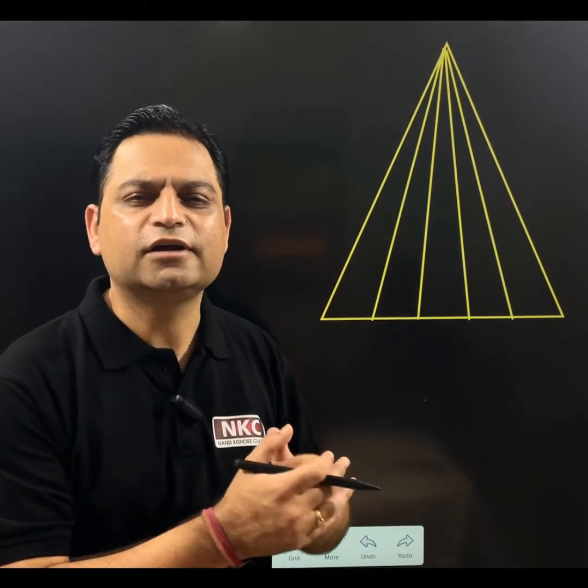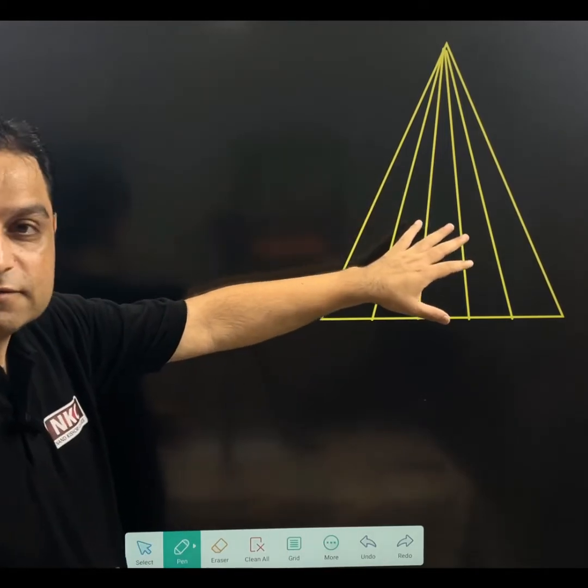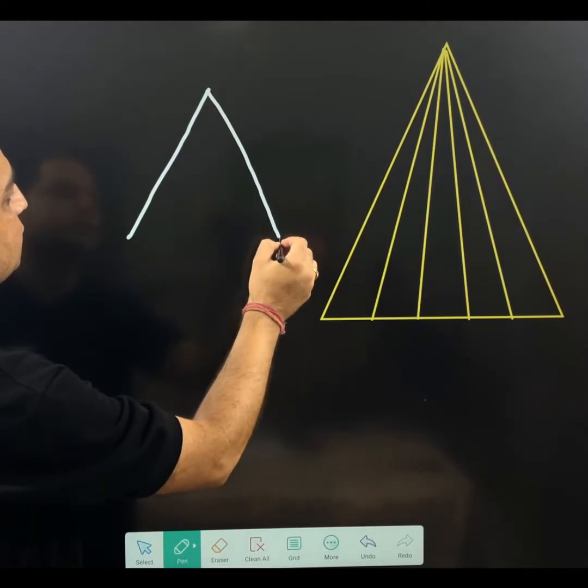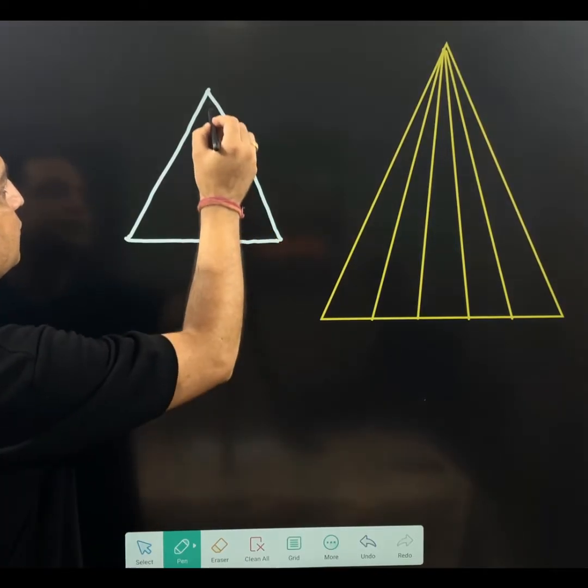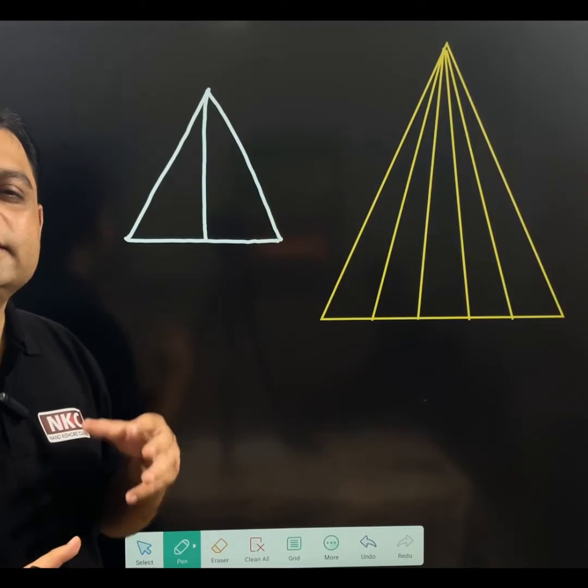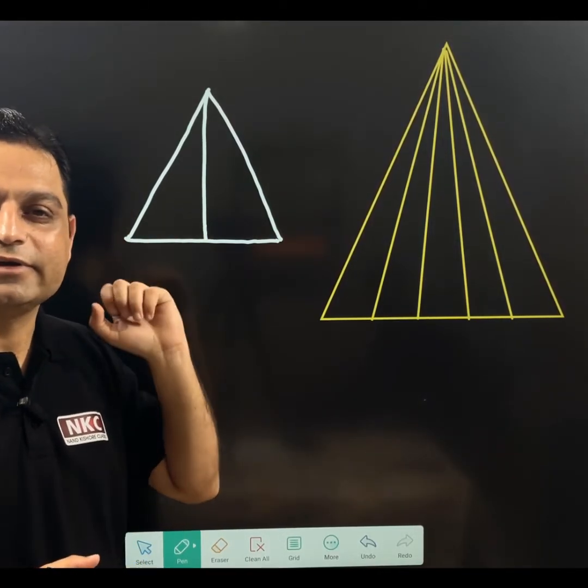Before telling you the shortcut trick, let me clarify the concept because concept should be clear always. So, before going to this diagram, I am going to draw another diagram. You can see here a very simple diagram with having one line in between. Let us try to understand how many triangles this diagram is having.